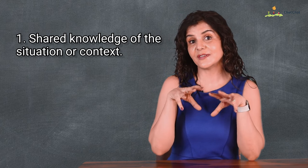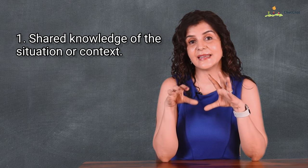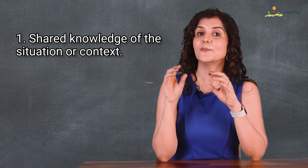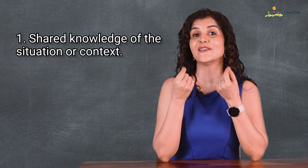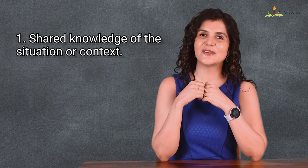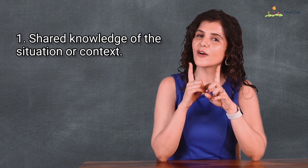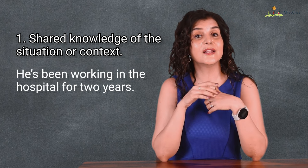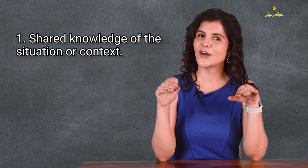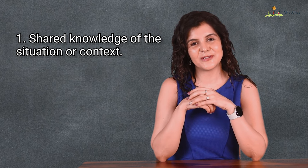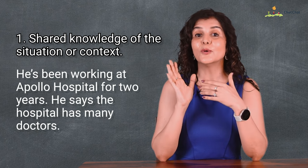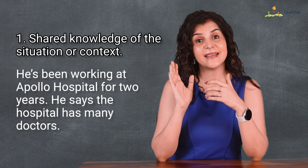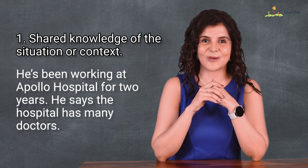While answering question two, note that there are four special groups of nouns considered definite in reference even without prior mention. The first group consists of nouns referring to shared knowledge of the situation or context. We might say the president will arrive tomorrow — shared knowledge that there is one president. Similarly, if there's only one hospital in town, we say he's been working in the hospital for two years. If there are many, you name the particular hospital first: he's been working at Polo Hospital; he says the hospital has many doctors.